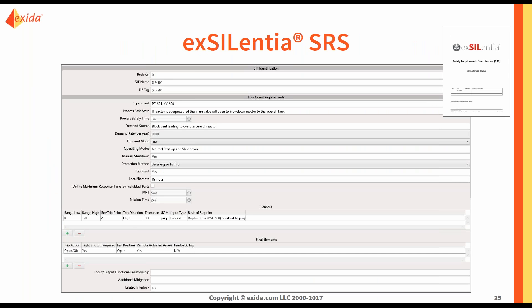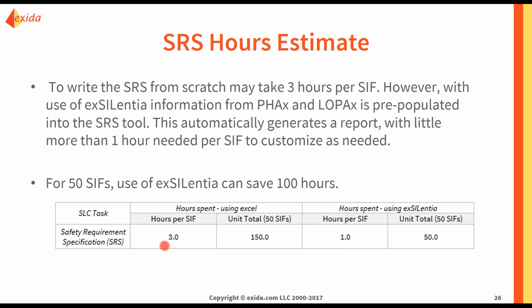Once SIL selection is complete, you move on to the safety requirements specification. This document outlines the purpose and target SIL of each SIF, answering: what is the safe state, what equipment needs to be protected, what actions must be taken, and what is the response time. It summarizes findings from the entire analysis phase and becomes the guideline for design and implementation. In ExSILentia's SRS module, much of this information is pre-populated from your LOPA and PHA — calculated demand rates, tag names, and more. Writing the SRS from scratch takes 3 hours per SIF, but with ExSILentia it takes only 1 hour, saving 100 hours over 50 SIFs.